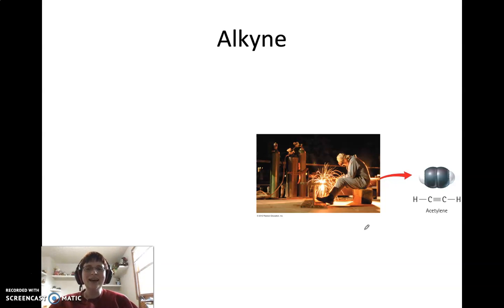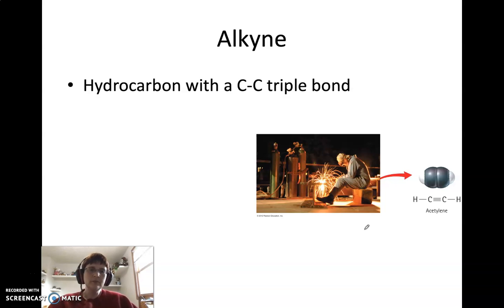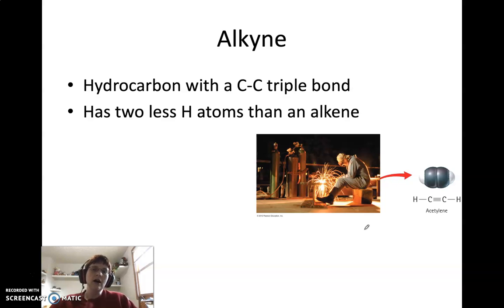I know, alkane, alkene, alkyne. These are hydrocarbons with a carbon-carbon triple bond. So carbon-carbon triple bonds have two less hydrogen atoms than an alkene. So we've got another formula similar to our last one, only now because we have another two hydrogens gone, it's CnH2n-2. So again, we cannot have a single carbon atom because we have a triple bond.